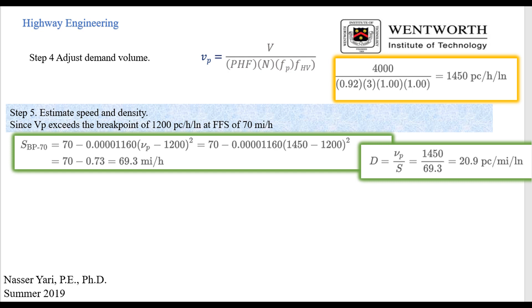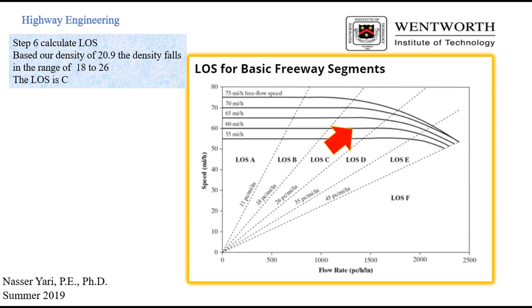And from there, it's easy. The density is equal VP divided by S, which is 1450 divided by 69.3. And we're going to get 20.9 passenger PC per mile per hour per lane. Now, if we look at this, and we're going to go ahead into step number six, we're going to say, okay, that was 20.9. And then look at the graph here. We say, all right, it's between level B, which is at 18, and then 26. So our number falls between there, and therefore is level C.